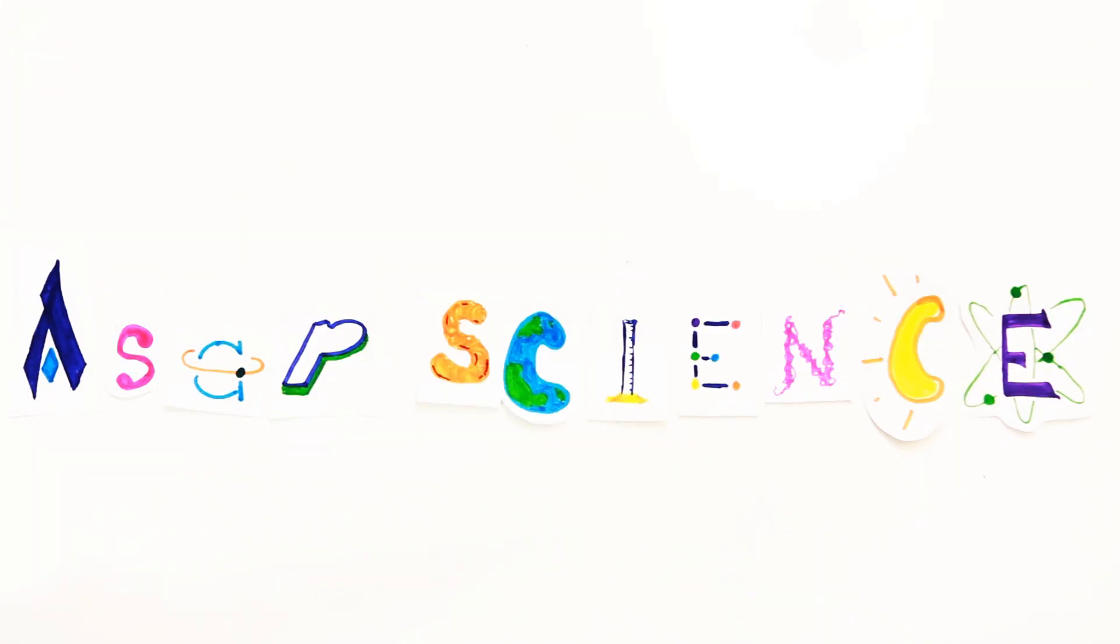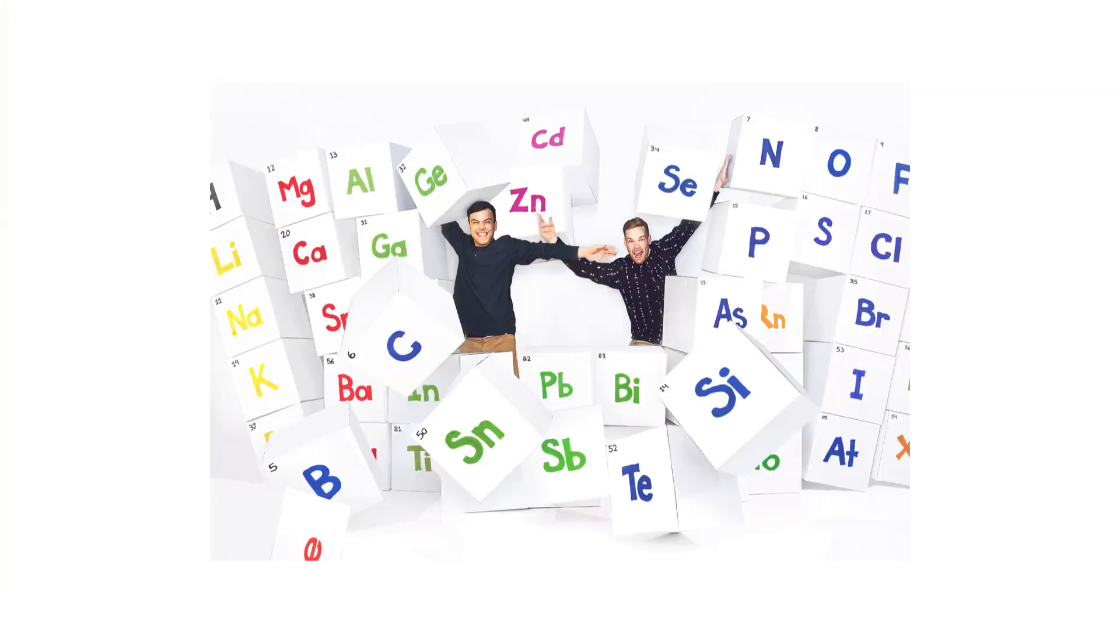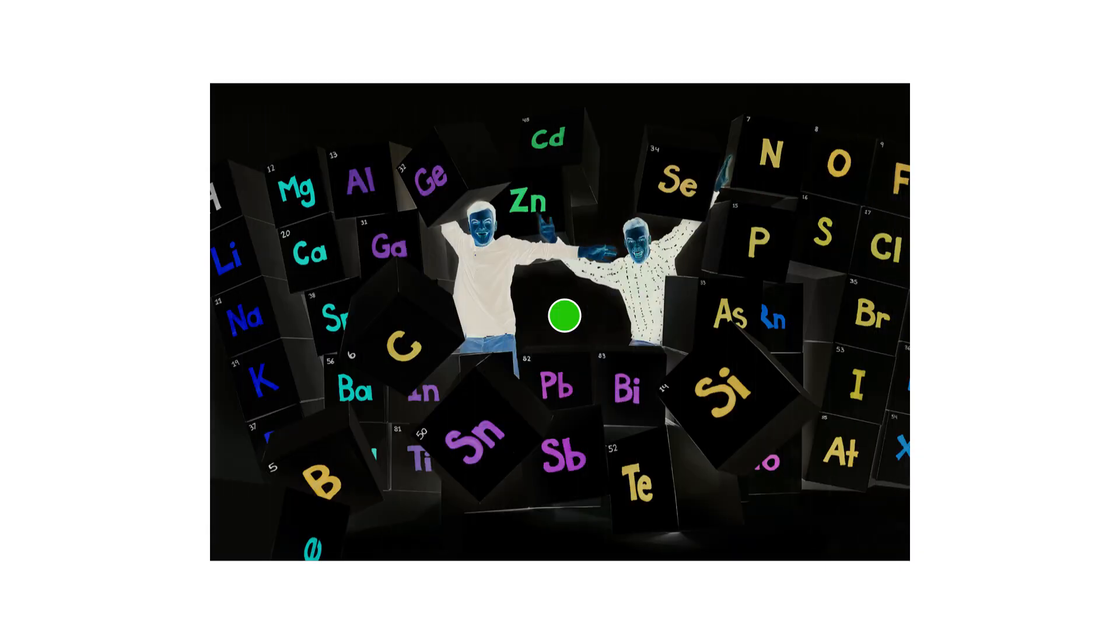Humans can discern between 2.3 million colors, but try staring at this picture of us bursting through the periodic table and focus on the green dot as we invert the colors. Don't stop staring there until I say.